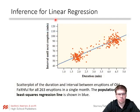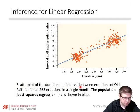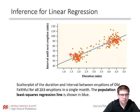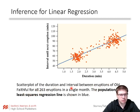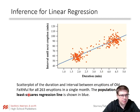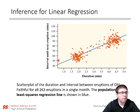So some new concepts to think about here. We have a scatter plot of the duration in minutes and interval until the next eruption in minutes of Old Faithful for all 263 eruptions in a single month. This is a population of eruptions for a month at least. The population least squares regression line is shown in blue — a line of best fit for that data.